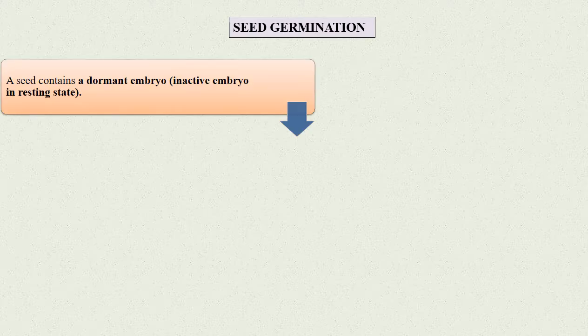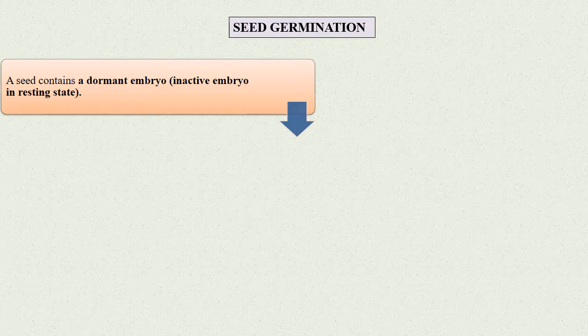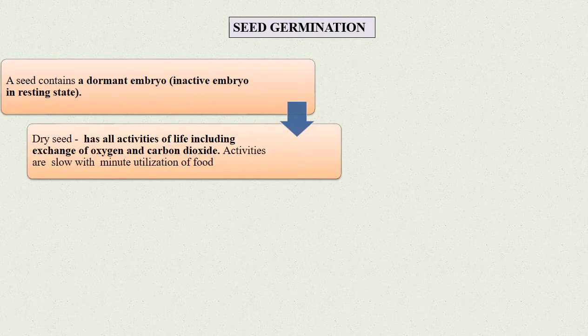Seed germination: We already know that a seed contains a dormant embryo, which is an inactive embryo in resting state. Dry seed, however, has all activities of life, including exchange of oxygen and carbon dioxide.